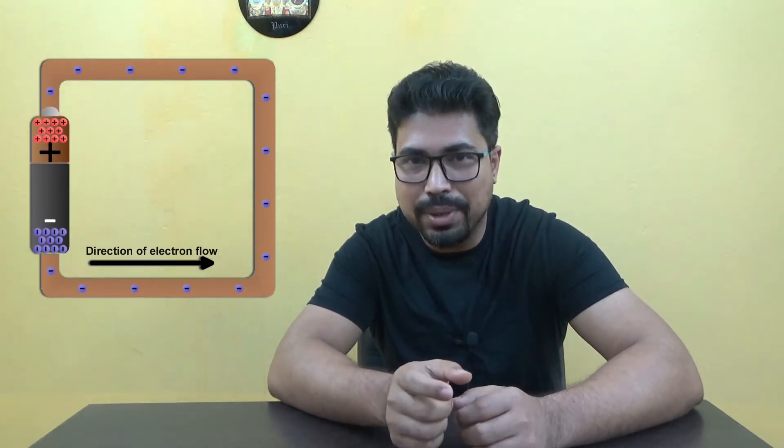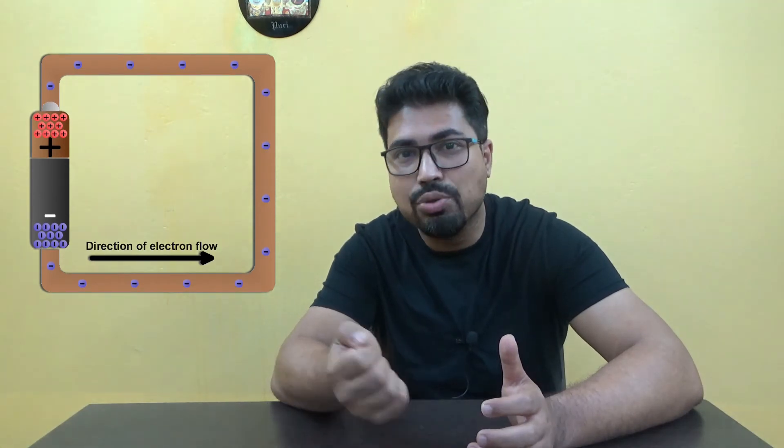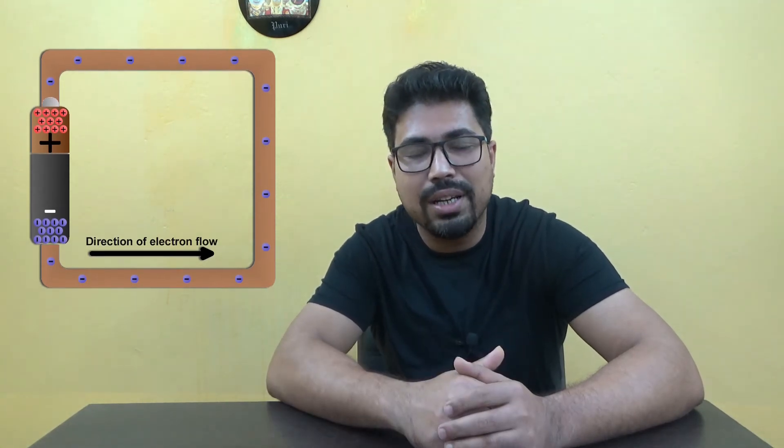Before explaining drift velocity and electron mobility, let me give you an example. When a metal or semiconductor has an electric field applied across it, by common phenomena, the free electrons of the metal or semiconductor will be pulled towards the positive terminal of the electric field.